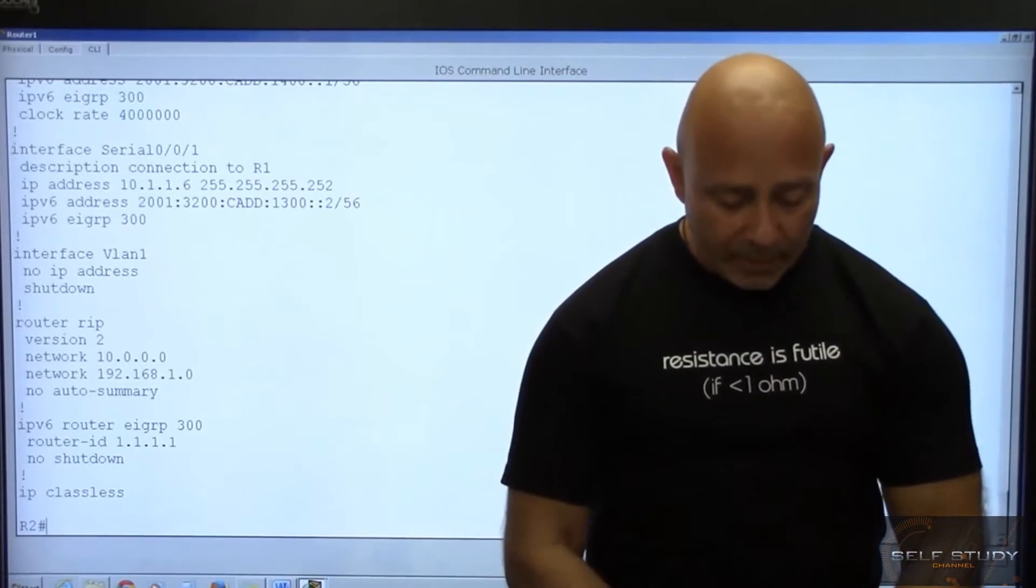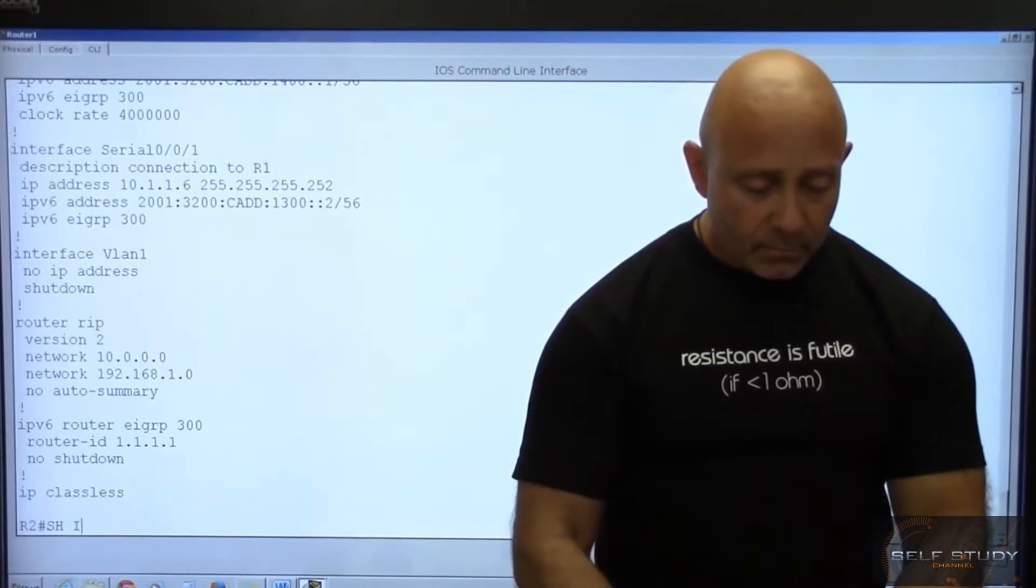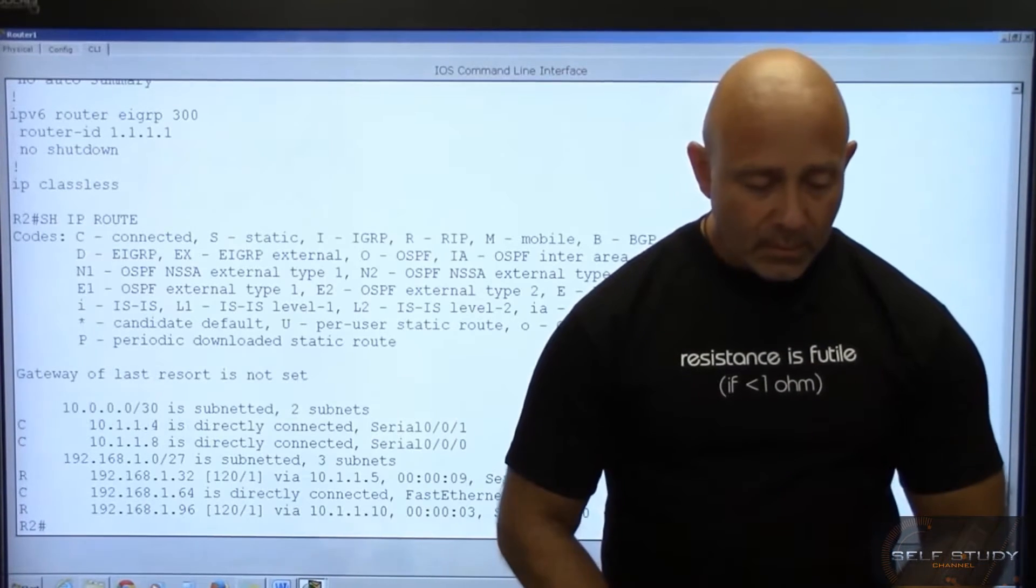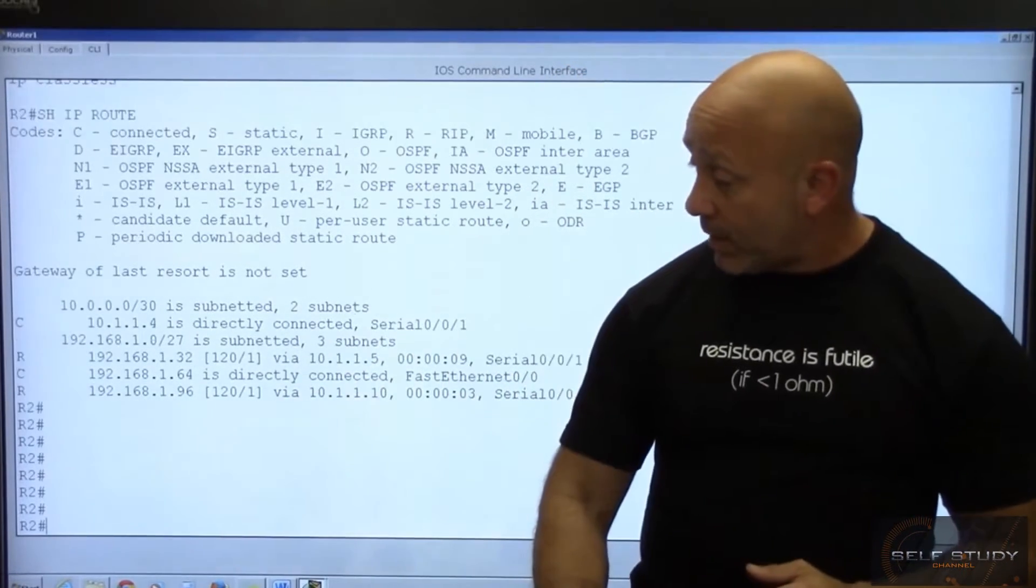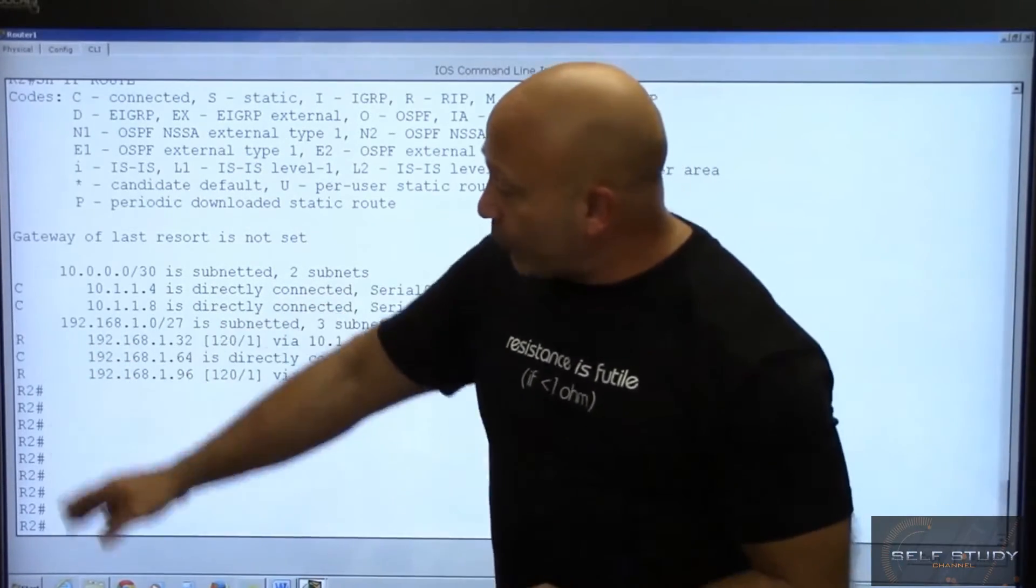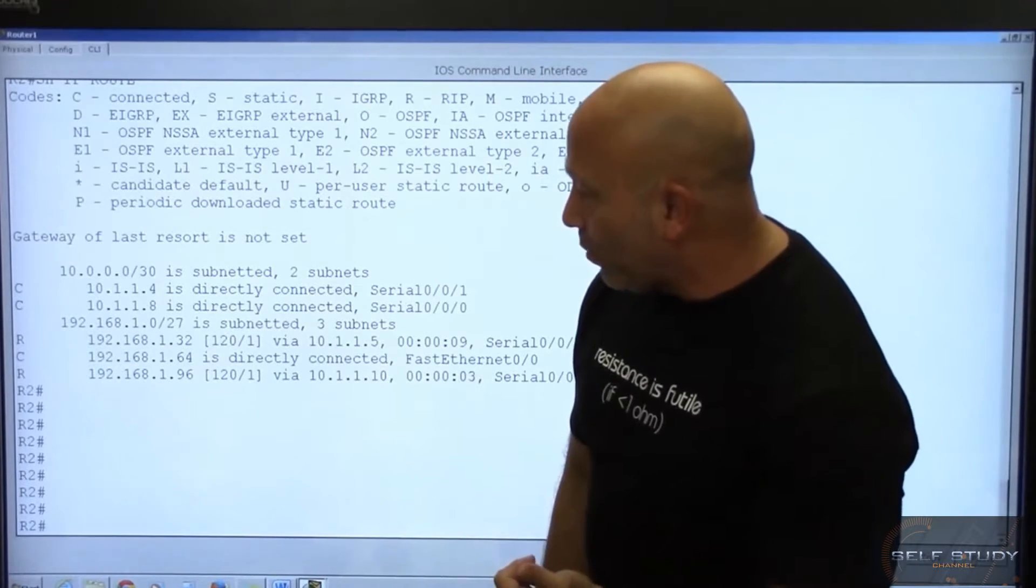How do we look at the routing table? What's the command? Exactly, show IP route. And we see that, I put it higher just in case you can't see it, we're getting things from RIP.